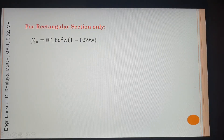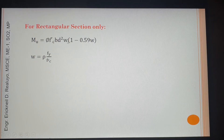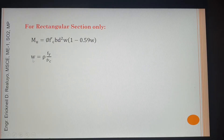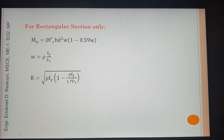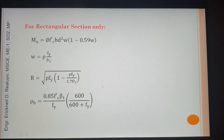For rectangular sections only, these are the formulas. The disadvantage of using this older formula is that you will be using omega — the tension reinforcement index — given by a specific expression, along with the ratio r and another formula.